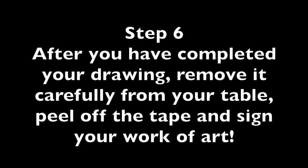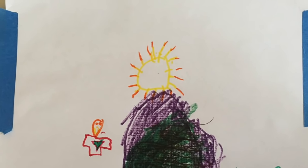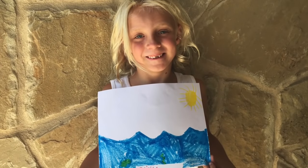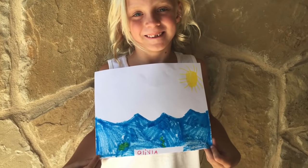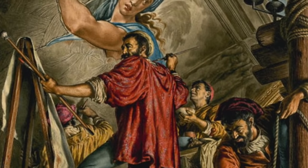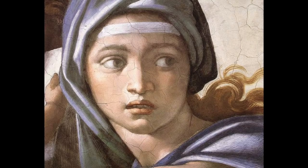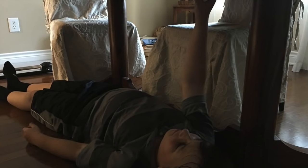Step 6: After you have completed your drawing, remove it carefully from your table, peel off the tape, and sign your work of art. Final step: add a sticky label to the back of your drawing and write your name on the label. Thank you for creating your own Michelangelo-inspired drawing today. We hope you enjoyed the experience of creating art on an upside down surface.